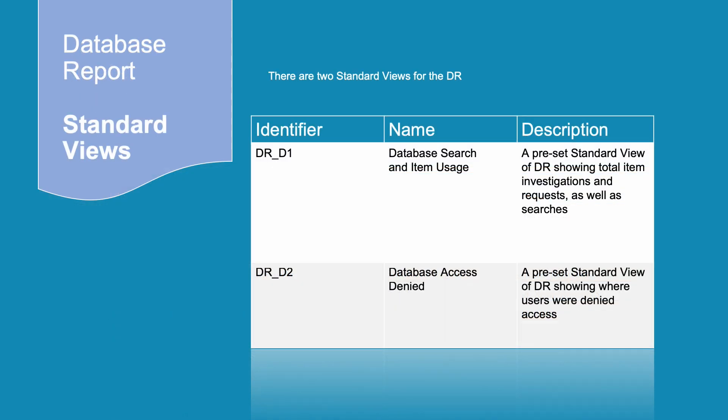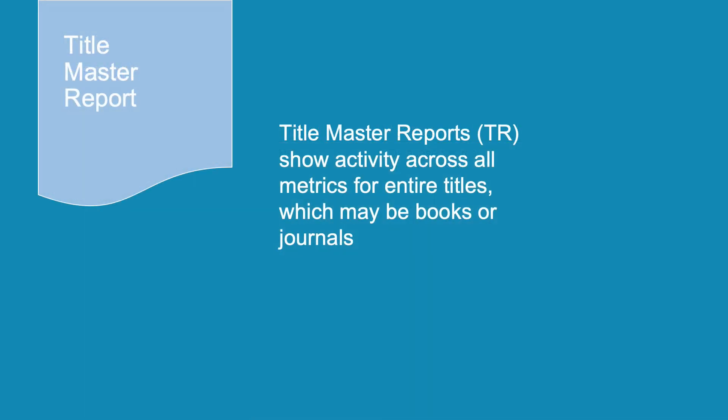The Database Master Report can be filtered according to user needs and has two standard views. DR D1 is Database Search and Item Usage — a preset standard view showing total item investigations and requests, as well as searches. DR D2 is a Database Access Denied Report, a preset standard view showing where users were denied access because simultaneous use (concurrency licenses) were exceeded, or because their institution did not have a license for the database.